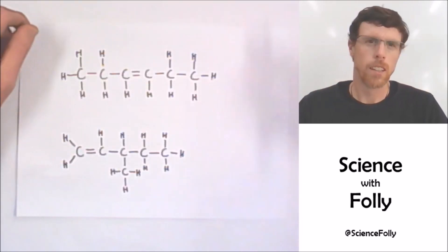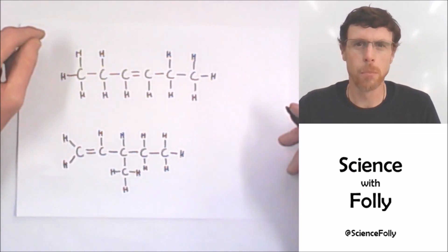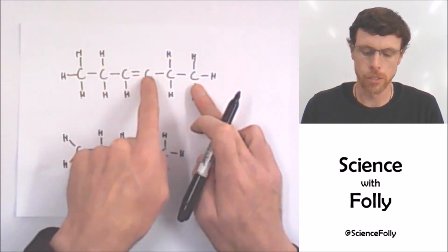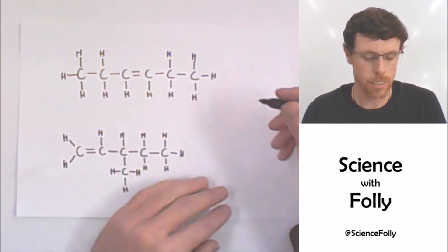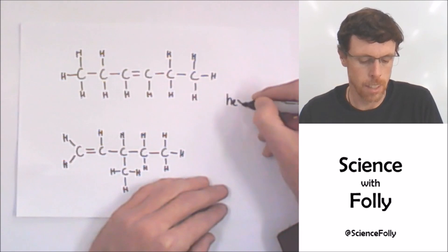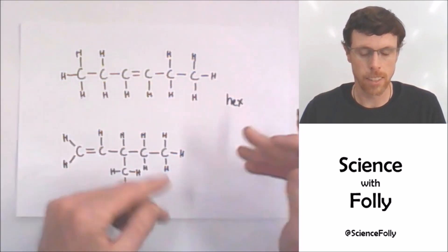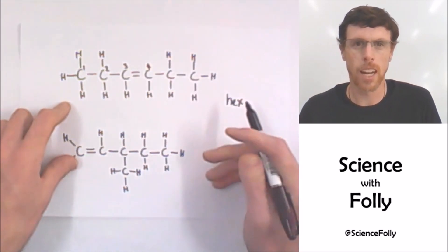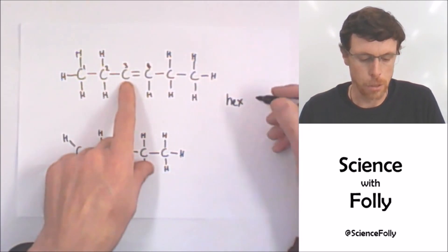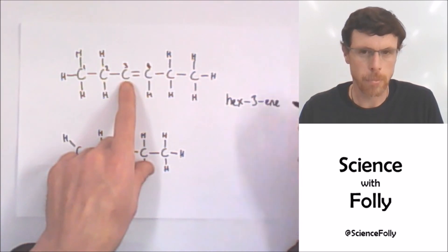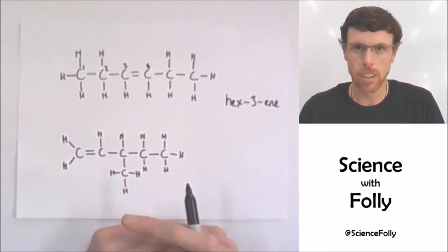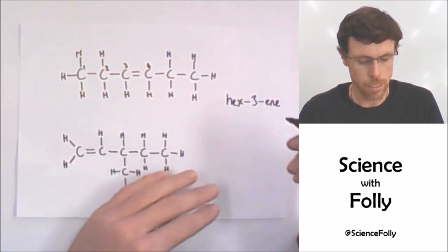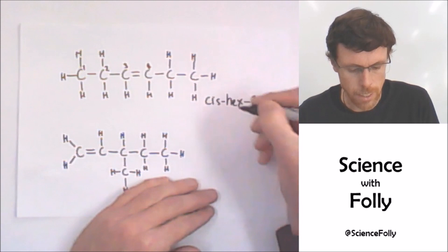Quick test — what are we going to call these two molecules? The first one: how many carbons? One, two, three, four, five, six. The prefix for six is 'hex', so it's obviously a hexene. Where's the double bond? One, two, three — it's between carbon three and four, so we call it hex-3-ene. And these two hydrogens on either side of the double bond — are they on the same side or opposite sides? Same side, so it's cis-hex-3-ene.